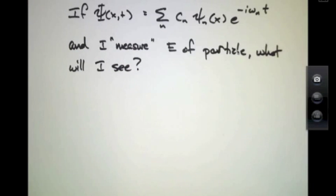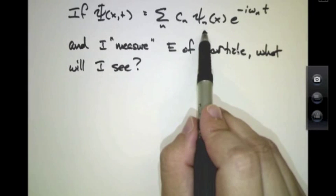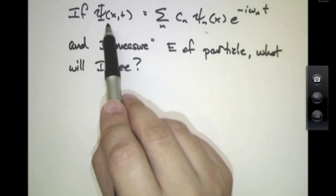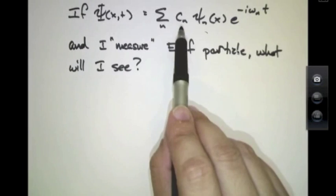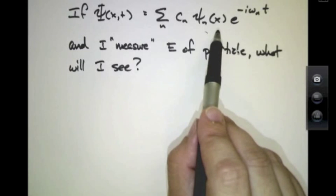Well, with a probabilistic interpretation of quantum mechanics, we have to think about what this superposition really means. We're saying that we have a wave function that describes this particle, and it has a superposition of allowed eigenfunctions.